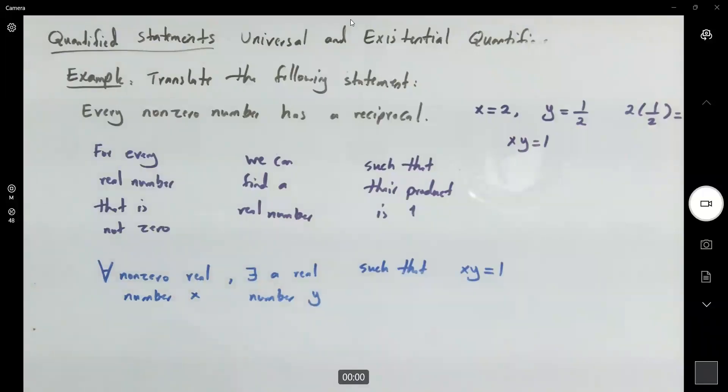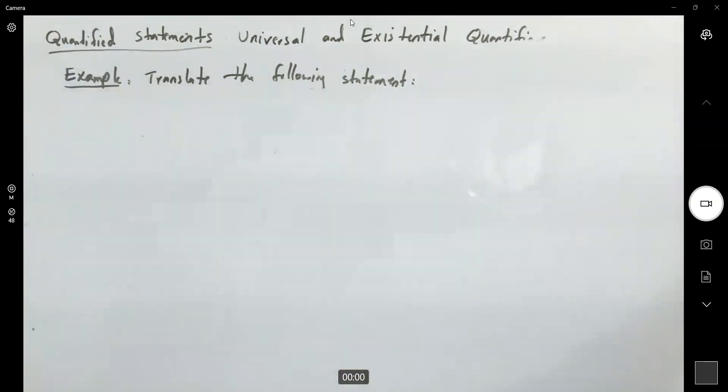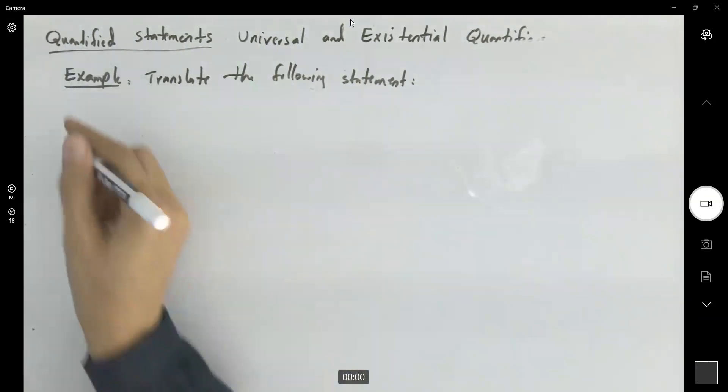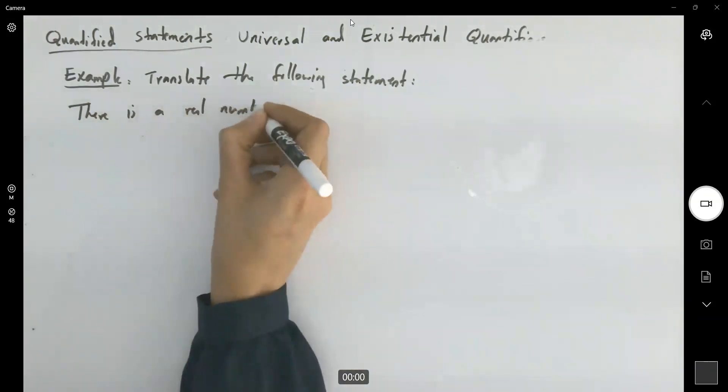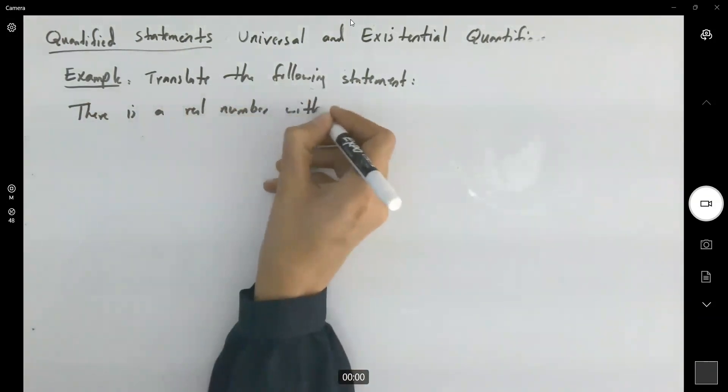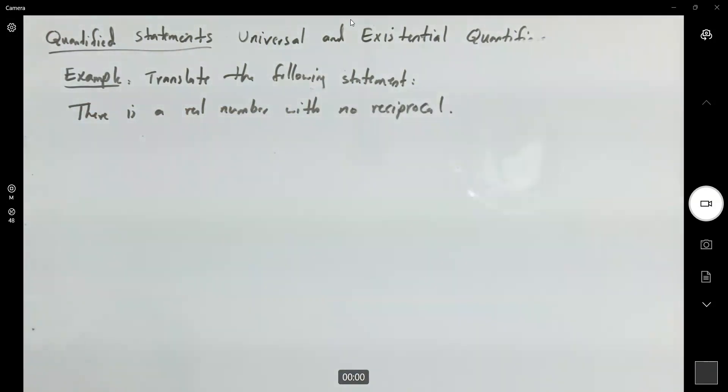Another example. Let's say that there is a real number with no reciprocal. There is a real number with no reciprocal. So, what's the meaning of that? Let's just try to translate this.